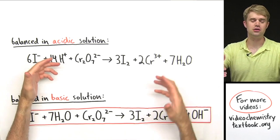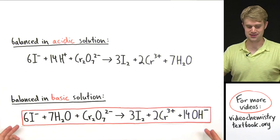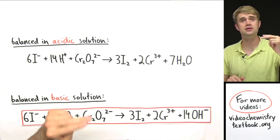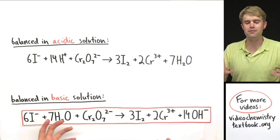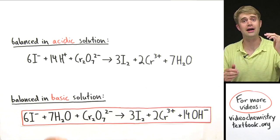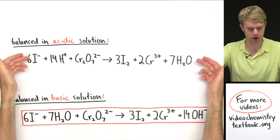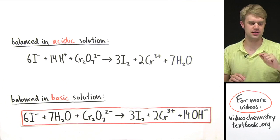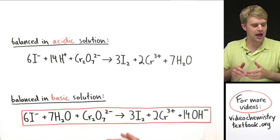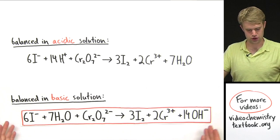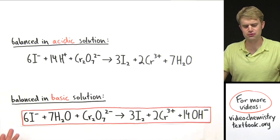You can use this crisscross pattern as a shortcut for converting equations balanced in acidic solution to basic solution. But it's still important to know these three extra steps — not just to rely on shortcuts, and also because your teacher will often ask you to show all your work. So I'm going to do one more example taking an equation already balanced in acidic solution and balancing it in basic solution using these three extra steps. After balancing, we'd want to do a final check on charges and atoms, but I'm confident in our work here.